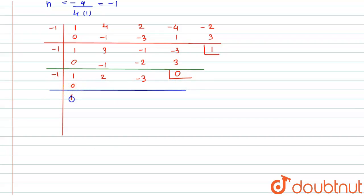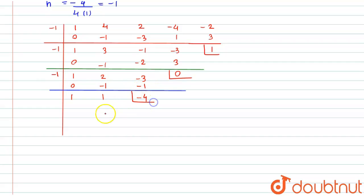Again carrying out the algorithm with the same factor −1: bring down 1; 1 × (−1) = −1, and 2 + (−1) = 1; 1 × (−1) = −1, and −3 + (−1) = −4.